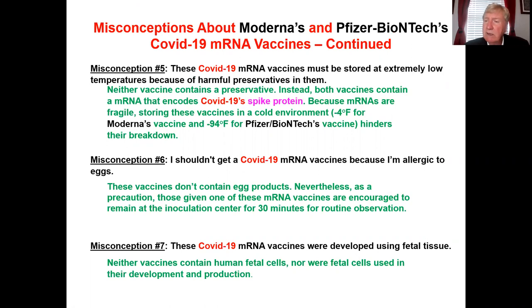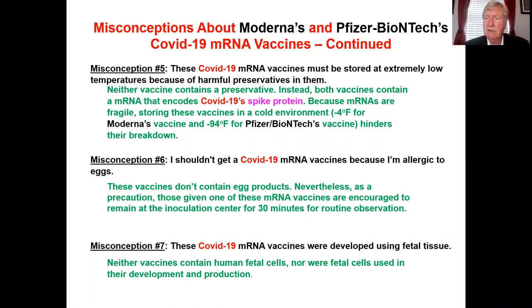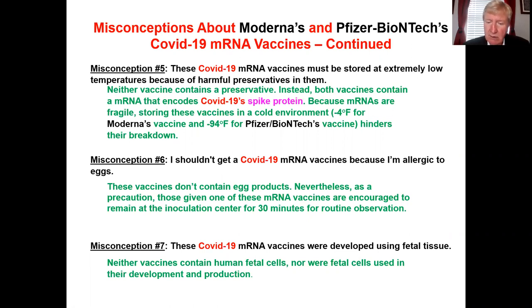Another misconception: 'I don't want to take these COVID-19 vaccines because they must be stored at extremely low levels — maybe they have something harmful in them, some preservative or other compound.' This is wrong. Neither vaccine has a preservative. The reason they have to be stored at very cold temperatures is because they contain messenger RNA, which is very fragile, and you have to store it at cold temperatures to prevent its breakdown. The sixth misconception: 'I shouldn't get a COVID vaccine because I'm allergic to eggs.' Eggs are used in other types of vaccines, but they're not used in these messenger RNA vaccines. Nevertheless, as a precaution, those given the messenger RNA vaccines are encouraged to remain at the inoculation center for 15 to 30 minutes for routine observation.